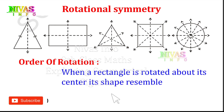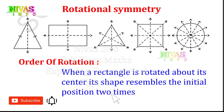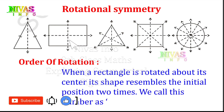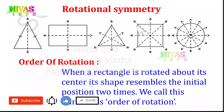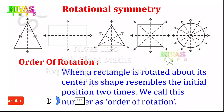Exercise: this number is called the order of rotation. Here we have four times. So here we have the order of rotation — six times. Here we have the initial position, starting position, then rotation also returns to the same position. This is called the order of rotation.